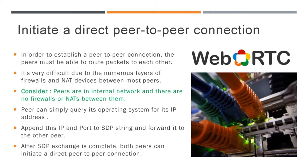We already discussed that in order to establish a peer-to-peer connection, the peers must be able to route packets to each other. But it is very difficult to achieve due to the numerous layers of firewalls and NAT devices. Consider both peers are located on the same internal network and there are no firewalls or NATs between them. In this case, to establish the connection, each peer can simply ask its operating system for an IP address. Once the operating system provides IP and port details, we can generate the SDP offer with these details and forward it to the other peer. Once the SDP exchange is complete, both peers can initiate a direct peer-to-peer connection.